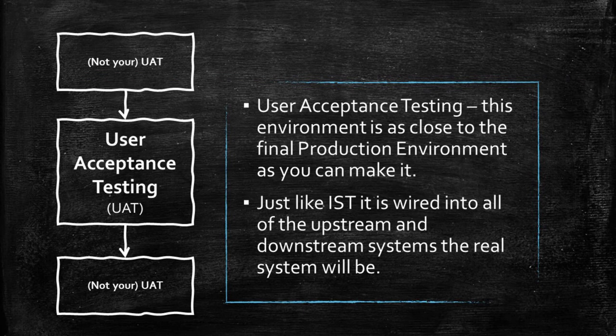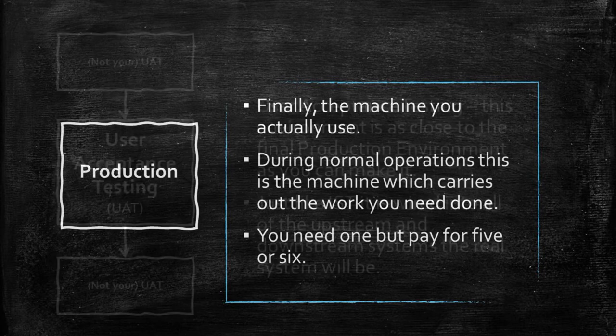Our next machine is UAT, or User Acceptance Testing. Ideally this should be as close in configuration, connections, and data as it is possible to make it to the real production environment. This is where you do your main set of testing. At this point, major logic flaws should be gone and you should have tested the data flows and transforms — they should all be working. And you have real users, hence the name User Acceptance Testing — real users, not IT people, log in to do testing on the system.